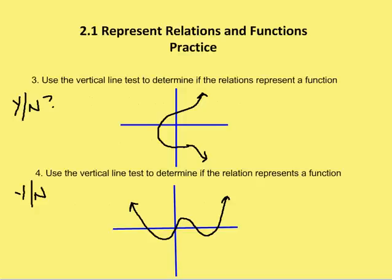Problem number 3 asks us to use a vertical line test to determine if the relations represent a function. So remember, if I can draw a vertical line anywhere on the graph and intersect only one point on the graph, then I know that it is a function. So as I take a look at number 3, I can just tell visually that I can draw a vertical line and it's going to go through two points in this graph. So this relation does not represent a function.